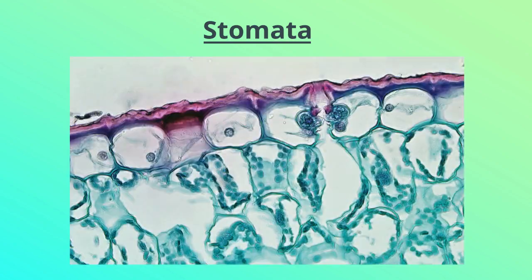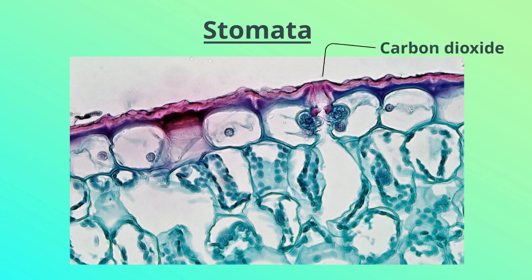Now let us see what stomata are and what role they play in photosynthesis. Stomata are the tiny pores present on the surface of leaves. In land plants, stomata are present on the epidermal layers, while in aquatic plants they are absent. In land plants, stomata help in the exchange of gases, and carbon dioxide required for photosynthesis enters through these stomata.